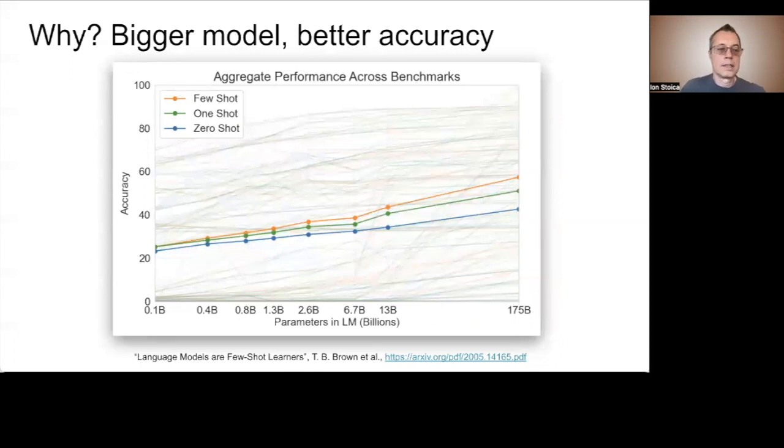So why is this? Well, one reason is that larger models have been shown to achieve much better accuracy. This is a plot from the GPT-3 paper published in 2020, which shows that the accuracy increases significantly as the model size increases for a variety of training and fine-tuning tasks, including zero-shot, one-shot, and few-shot learning.